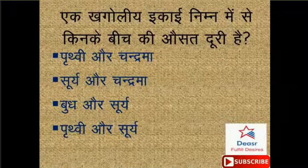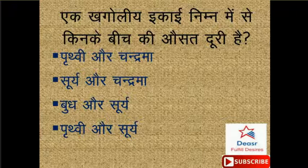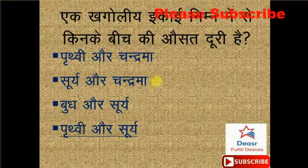Ek Khagoliya Ikaai (astronomical unit) nimn mein se kin ke beech ki duri hai? Options: Prathvi aur Chandrama, Surya aur Chandrama, Budh aur Surya, Prathvi aur Surya. Toh iska sahih jawab hai, doston - Prathvi aur Surya. Option number D yahan pe correct hai.